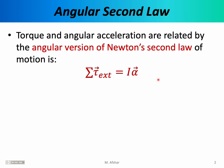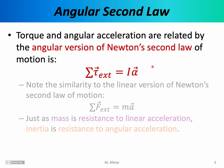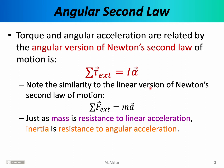Isaac Newton did not discover this formula — as far as I know, he had nothing to do with it. However, this formula is important and is often called the angular version of Newton's second law because it resembles Newton's second law of motion, which states that the sum of the forces equals mass times acceleration. This formula has a very similar mathematical structure.